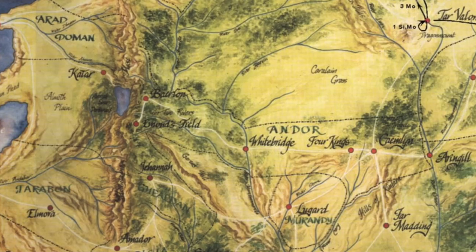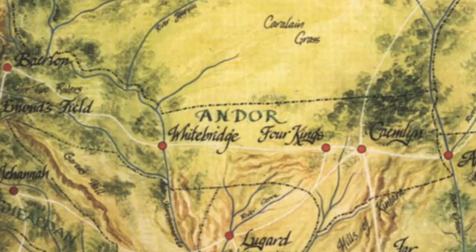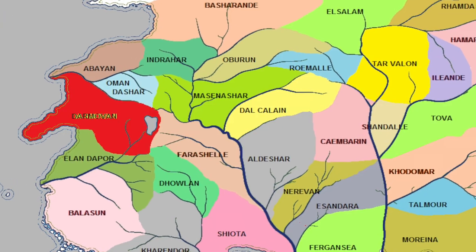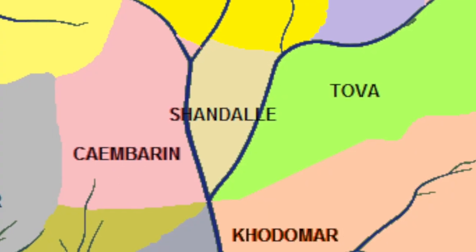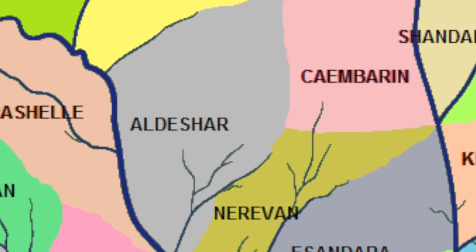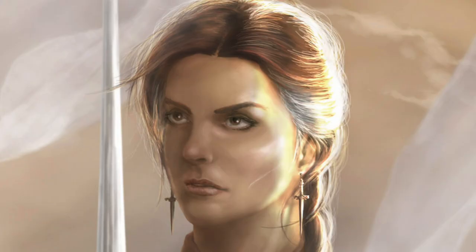Without further ado, let's take a look at the nation of Andor. Kicking it off, let's dive into the history of Andor. Andor is one of the oldest nations in the Westlands. Its origins date back to the time of Artur Hawkwing's empire. Hawkwing was a ruler of a small kingdom that managed to conquer the entire Westlands. The kingdom of Aldashar was conquered by Hawkwing's forces around a thousand years prior to the beginning of the Eye of the World. Hawkwing left the royal line of Aldashar in power to rule as his governors for the province. Andorah Kasselin was the daughter of the last king of Aldashar and she was appointed as Hawkwing's governor.